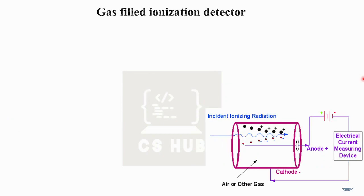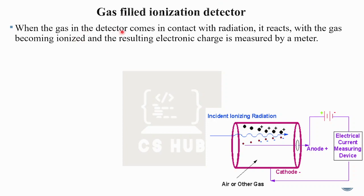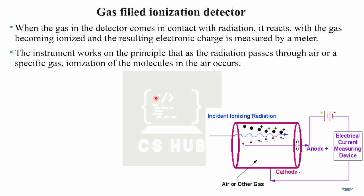The gas-filled ionization detector works as follows: when the gas in the detector comes in contact with radiation, it reacts with the gas, becoming ionized, and the resulting electronic charges are measured by a meter. The instrument works on the principle that as radiation passes through air or a specific gas, ionization of the molecules in the air occurs.